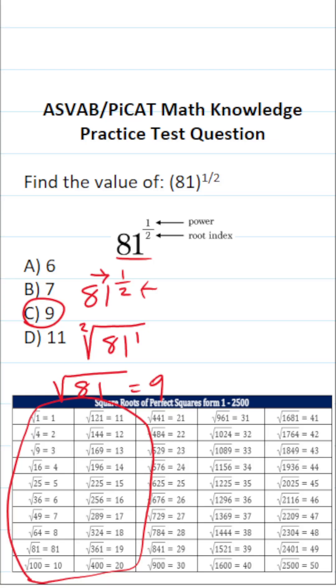So for example if this problem says what is 64 to the one half power you should be able to say well that's the square root of 64 and I know the square root of 64 is 8.